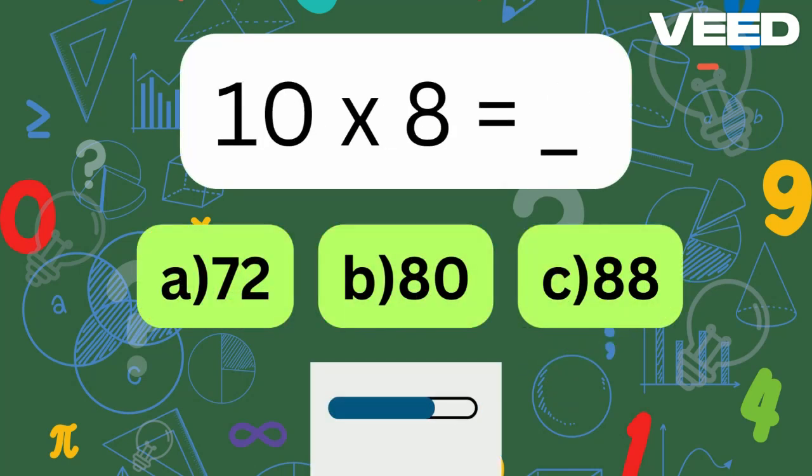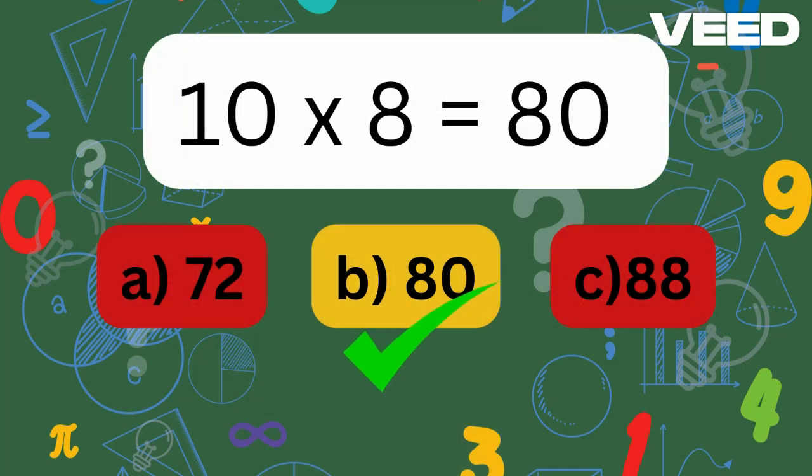10 times 8 is? 10 times 8 is equal to 80.